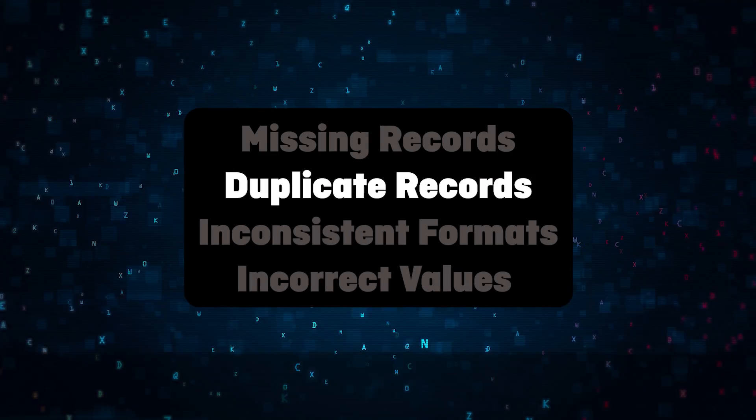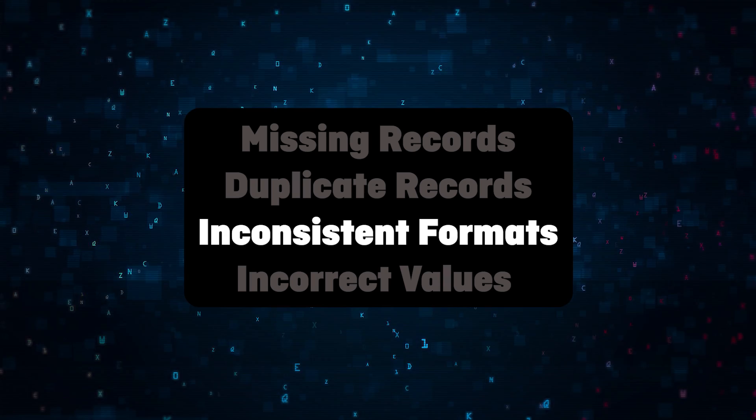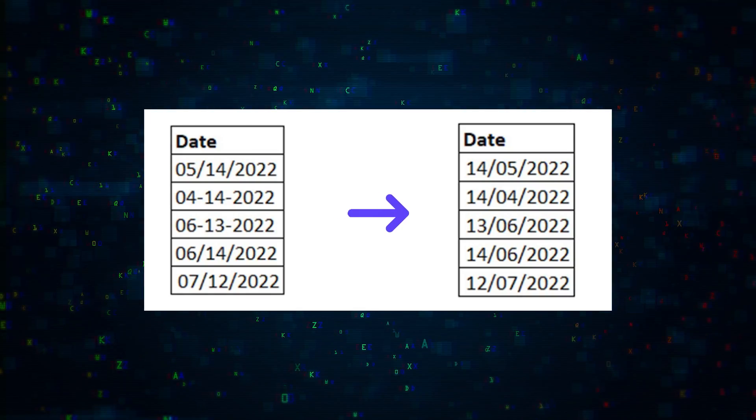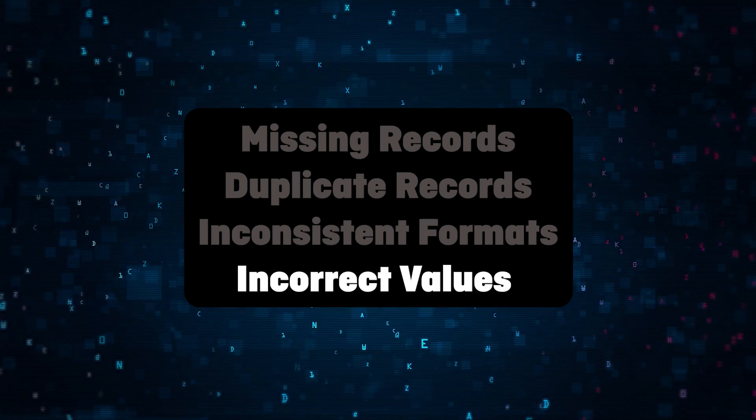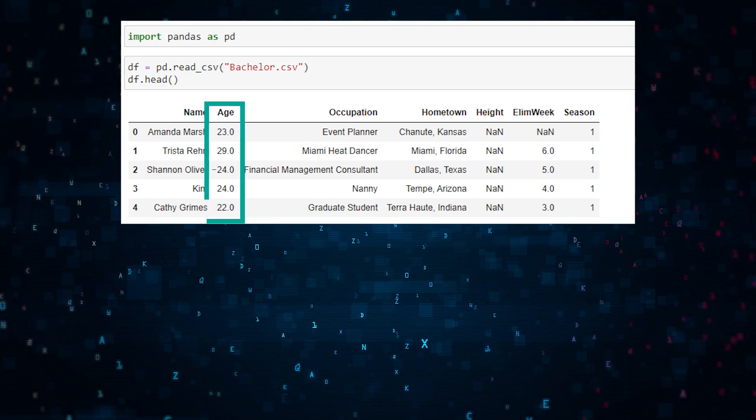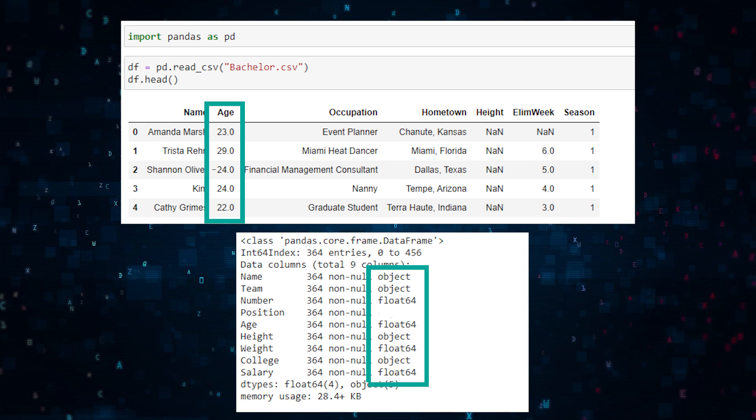Here are a few things that you're going to need to know how to fix: missing records, duplicate records, inconsistent formats like different date formats, incorrect values like if there's a negative number for someone's age, or random white spaces messing up your data types. You're going to need to know how to fix all of that.